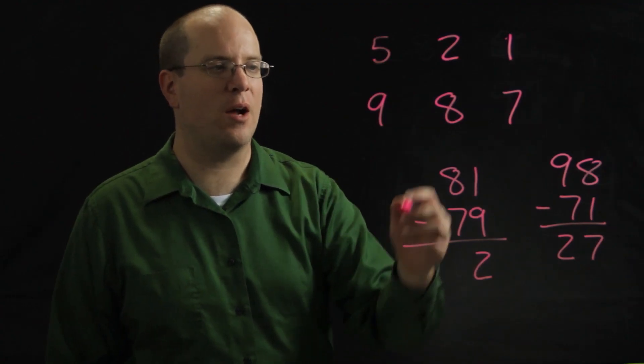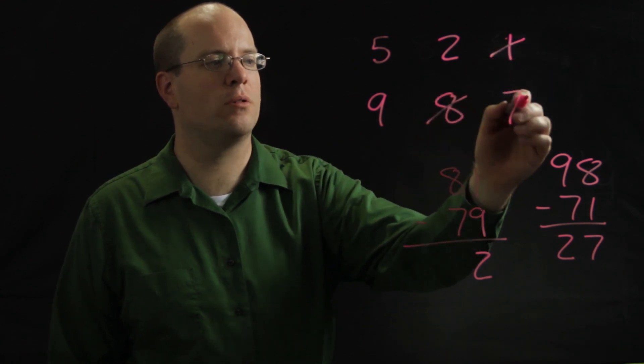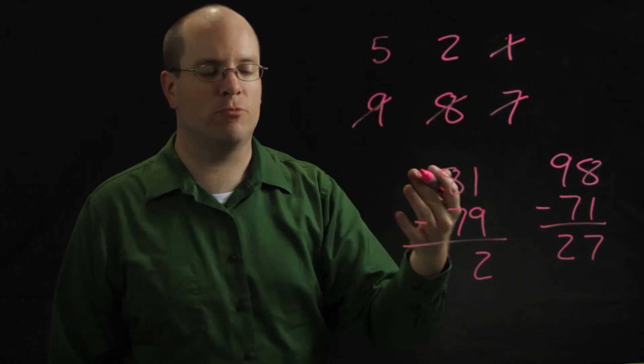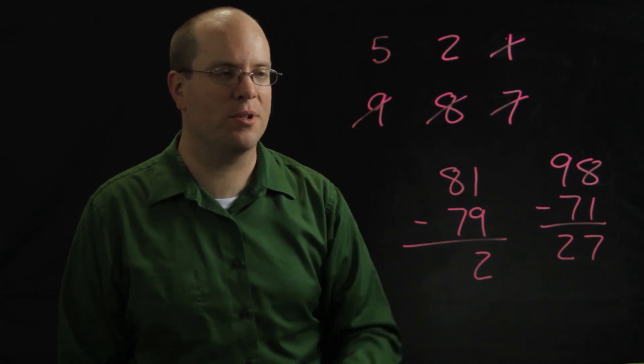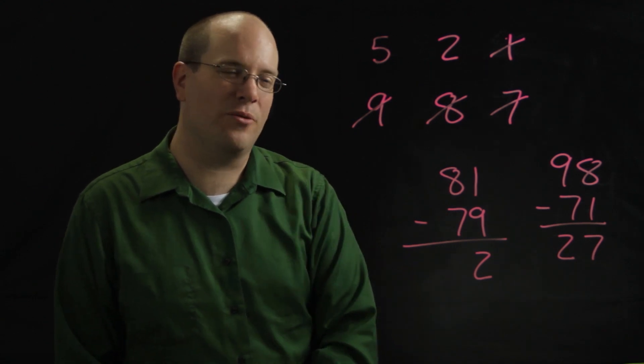And just like in Close to 100, I would discard the ones that I used, keep those two, draw four more, and do the same thing again. And after about five rounds, you can see who has the lowest total score. So this is a good one for subtraction.